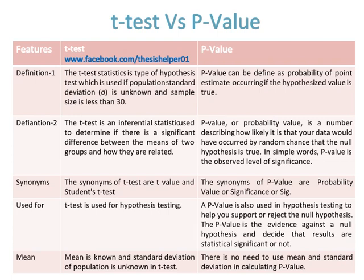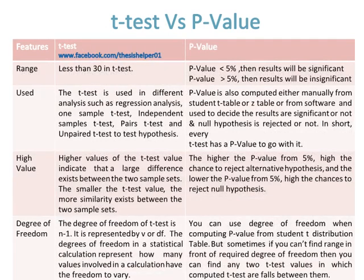In a t-test, the mean is known and the standard deviation of the population is unknown, while there is no need to use mean and standard deviation when calculating the p-value. The sample size range is less than 30 in a t-test, while a p-value less than five percent means results will be significant.